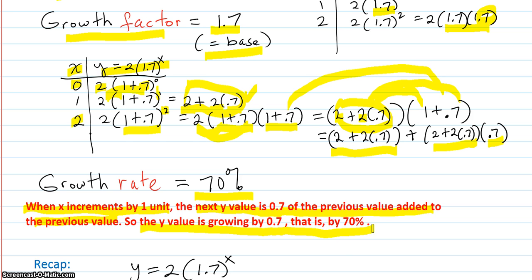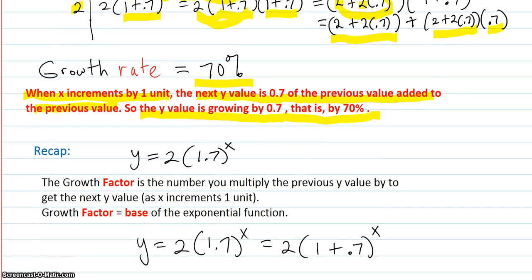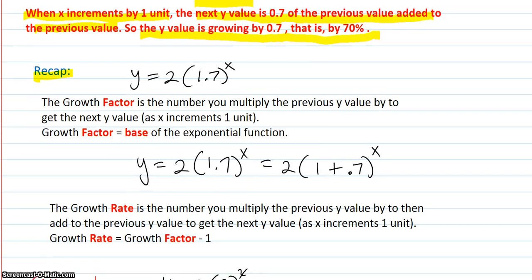Here's the recap. We have our original function. The growth factor is the number you multiply the previous value by to get the next y value as x increments one unit. The growth factor equals the base. So the 1.7 is the growth factor, always the base right in there.